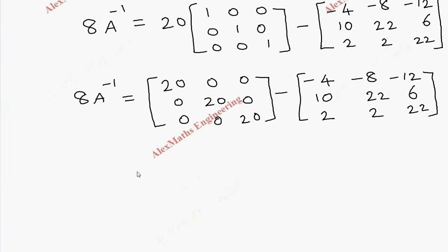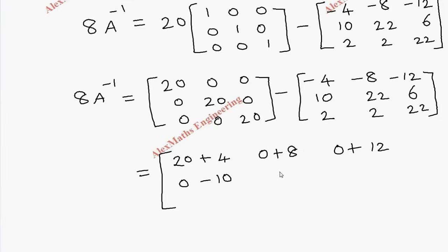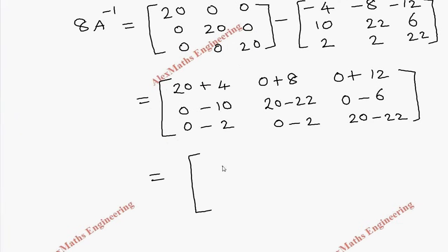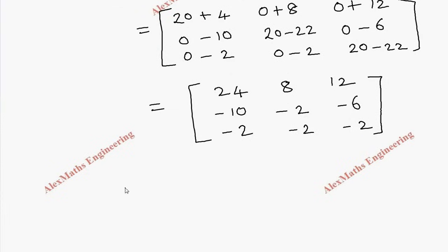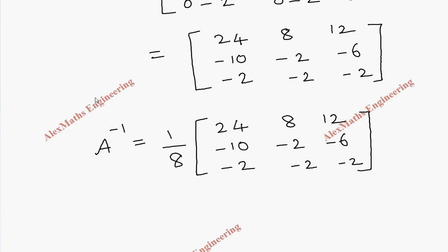Combining as a single matrix: 20 minus minus 4 gives 24, then 0 plus 8 gives 8, then 0 plus 12 gives 12. Second row: 0 minus 10 gives minus 10, then 20 minus 22 gives minus 2, then 0 minus 6 gives minus 6. Third row: 0 minus 2 gives minus 2, 0 minus 2 gives minus 2, and 20 minus 22 gives minus 2. So 8A inverse equals the matrix with rows 24, 8, 12; minus 10, minus 2, minus 6; minus 2, minus 2, minus 2. Therefore, A inverse equals 1 over 8 times this matrix, and thus we have found A inverse.